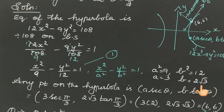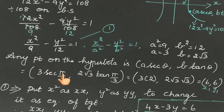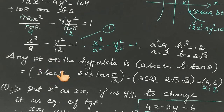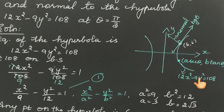Any point on the hyperbola is of the form (a secθ, b tanθ). At theta equals pi by 3, the point is (3 sec(π/3), 2√3 tan(π/3)). Since sec 60° equals 2, we get 3×2 equals 6. Since tan 60° equals √3, we get 2√3 × √3 equals 2×3 equals 6. Therefore the point is (6, 6).